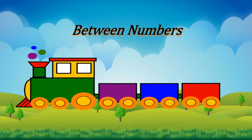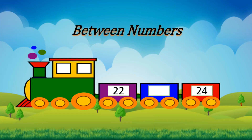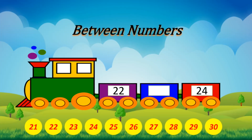In this train, we have number 22 and number 24. Which number comes between number 22 and 24? Kids, can you find the answer? Yes, very good — your answer is number 23. 23 is the middle of number 22 and 24. Very good, kids.